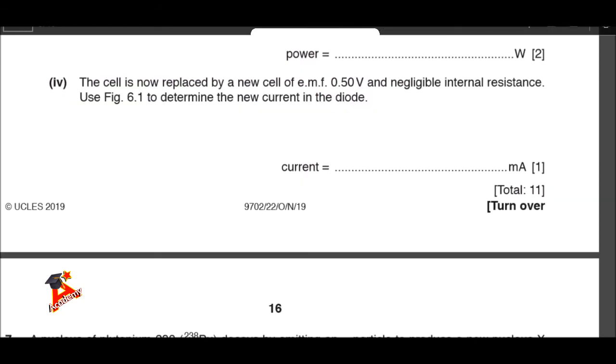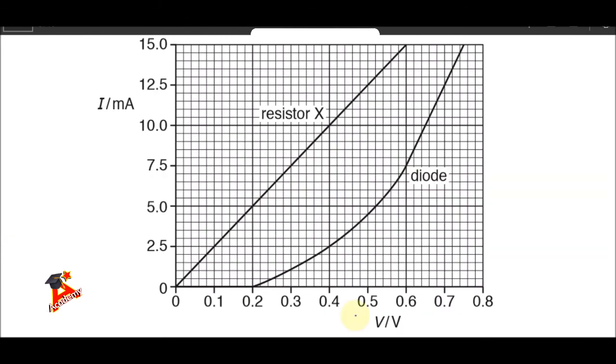To answer item 4, which says the cell is now replaced by a new cell of EMF 0.5 volts and negligible internal resistance, use Fig 6.1 to determine the new current in the diode. To answer this question, we need to look at our given graph. And the current is 4.5 milliamps.